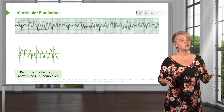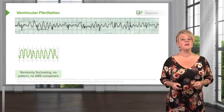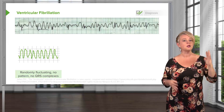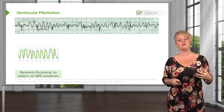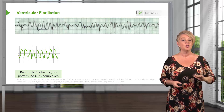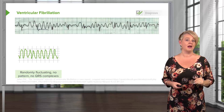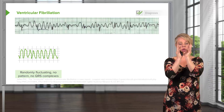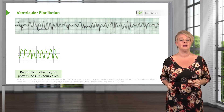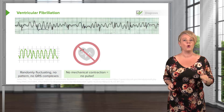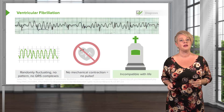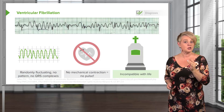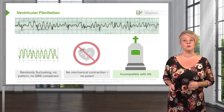Here's a review on ventricular fibrillation. Like we said in the last lecture, this is one of our two shockable rhythms. This is randomly fluctuating, completely disorganized electrical activity — no pattern, no QRS complexes. The heart is literally just quivering in the chest; it's not actually beating, meaning there's no cardiac output whatsoever. This rhythm, if it's not terminated, is completely incompatible with life.